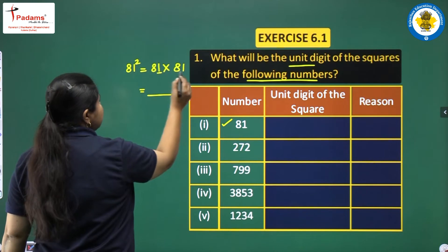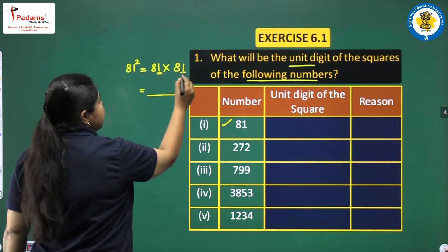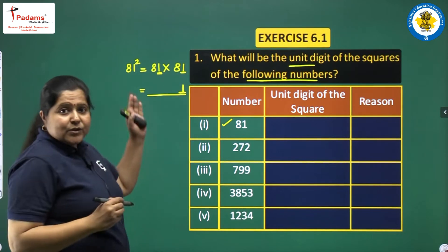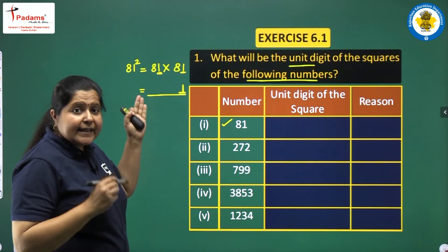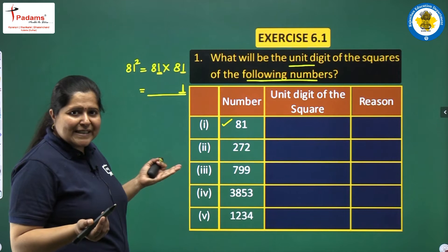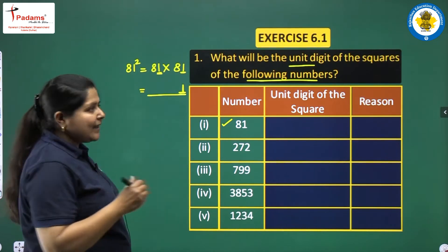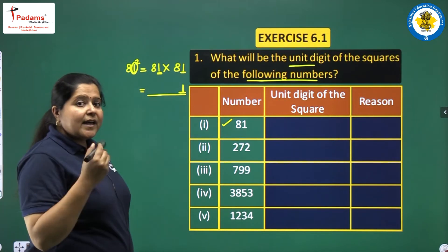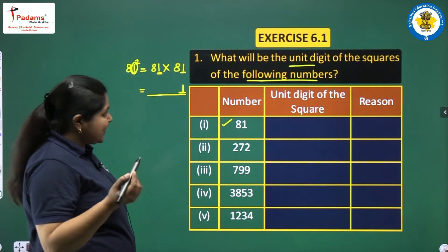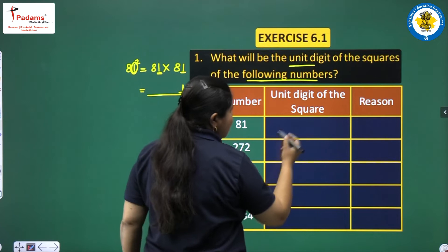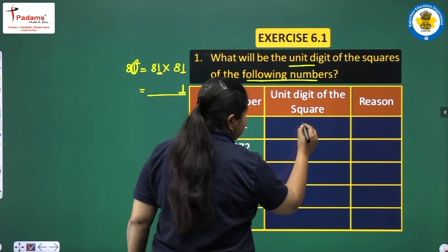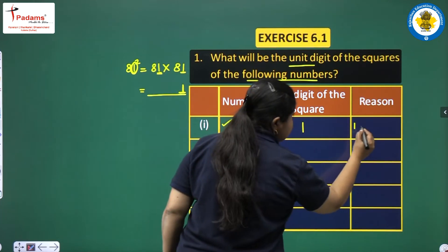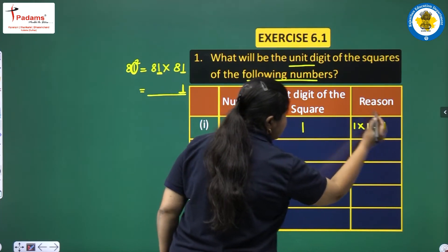The ones place digit of 81 is 1, and 1 times 1 is 1. So whatever the square comes out to, the last digit should be 1. The unit digit of the square of 81 will be 1, because 1 into 1 is equal to 1.